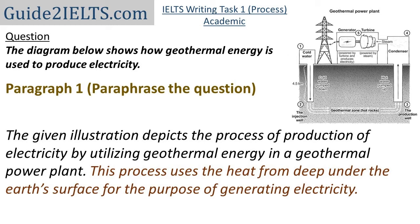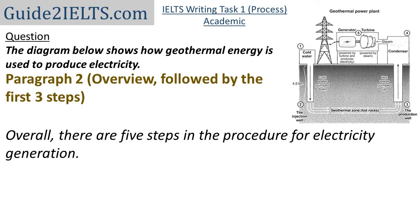Notice that in these two sentences only, I've changed 'produce' to 'production' and I've also introduced the word 'generate'. The next paragraph, the second paragraph, in which the first statement is the overall statement: 'Overall, there are five steps in the procedure of electricity generation.'